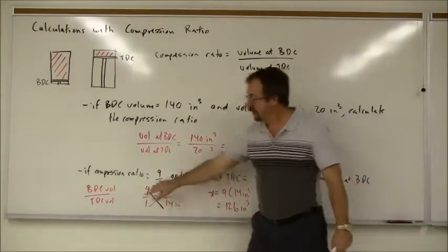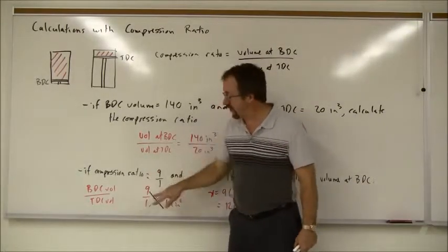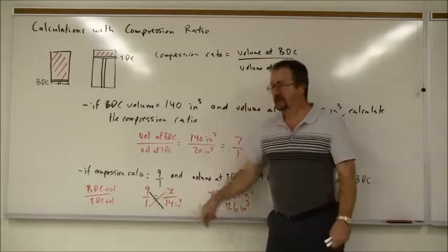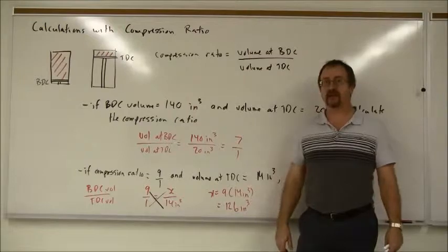So remember, write out your clue so you know which value means which. Write out the ratio, write out the things you know, cross-multiply, then it's a short exercise in algebra.